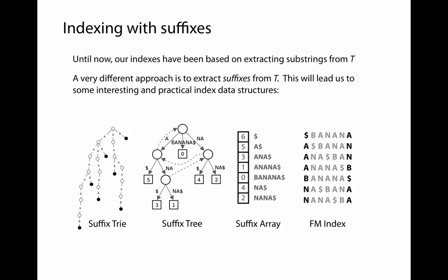Today we're going to start talking about indexing with suffixes. Up to now we talked about indexing approaches based on extracting substrings from the text T and putting them into some kind of map data structure. A very different approach is to extract all of the suffixes from T. This leads to data structures that are surprisingly quite concise and practical. Very modern tools for solving the read alignment problem use approaches like the suffix array and the FM index.